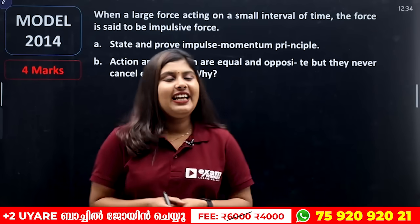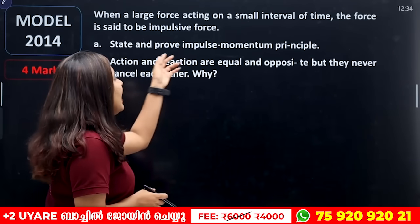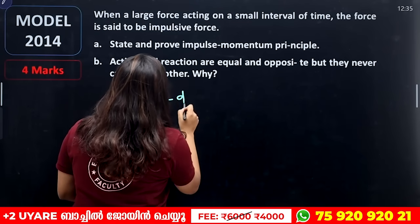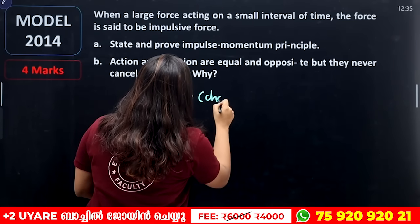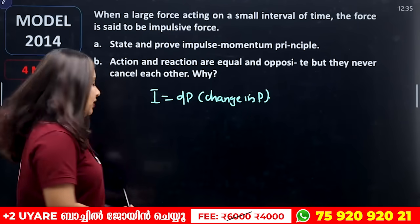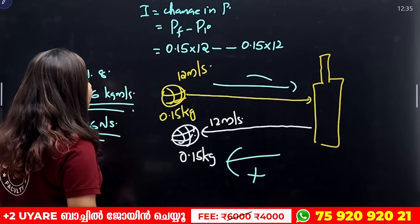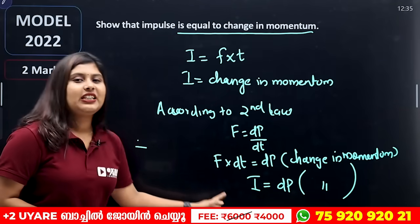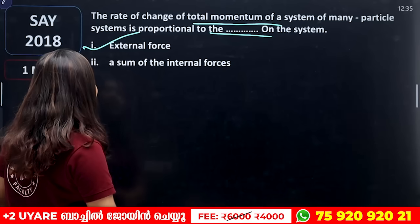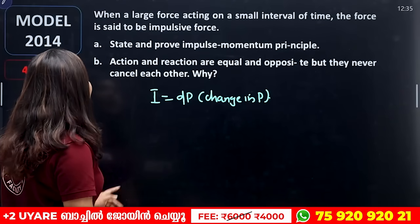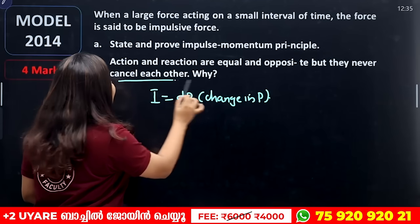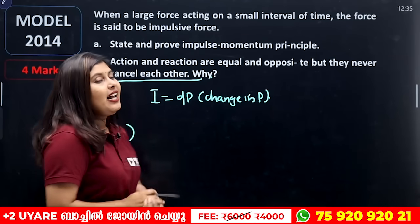A force that is applied over a large magnitude in a short interval of time is called an impulsive force. Now, state and prove the impulse-momentum principle: impulse is equal to dp, which is change in momentum.